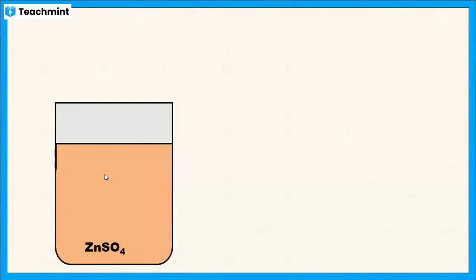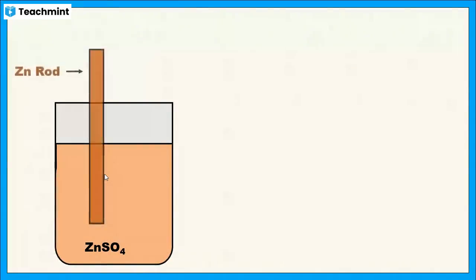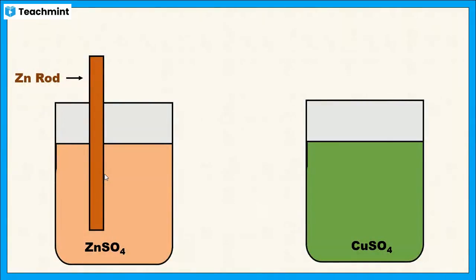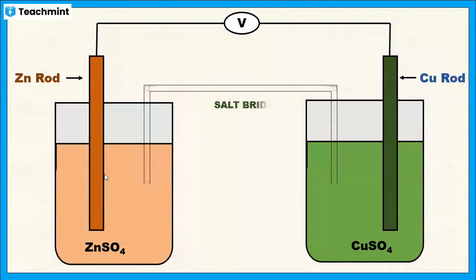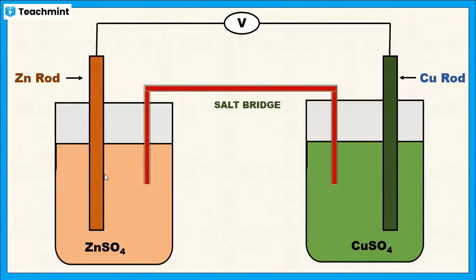The Daniel cell is an example of a galvanic cell. This cell consists of two electrodes: one is a zinc electrode immersed in zinc sulfate solution, and the other is a copper rod immersed in copper sulfate solution. These two electrodes are connected through a voltmeter, and the solutions are connected through a salt bridge filled with inert salts like potassium chloride or ammonium nitrate.